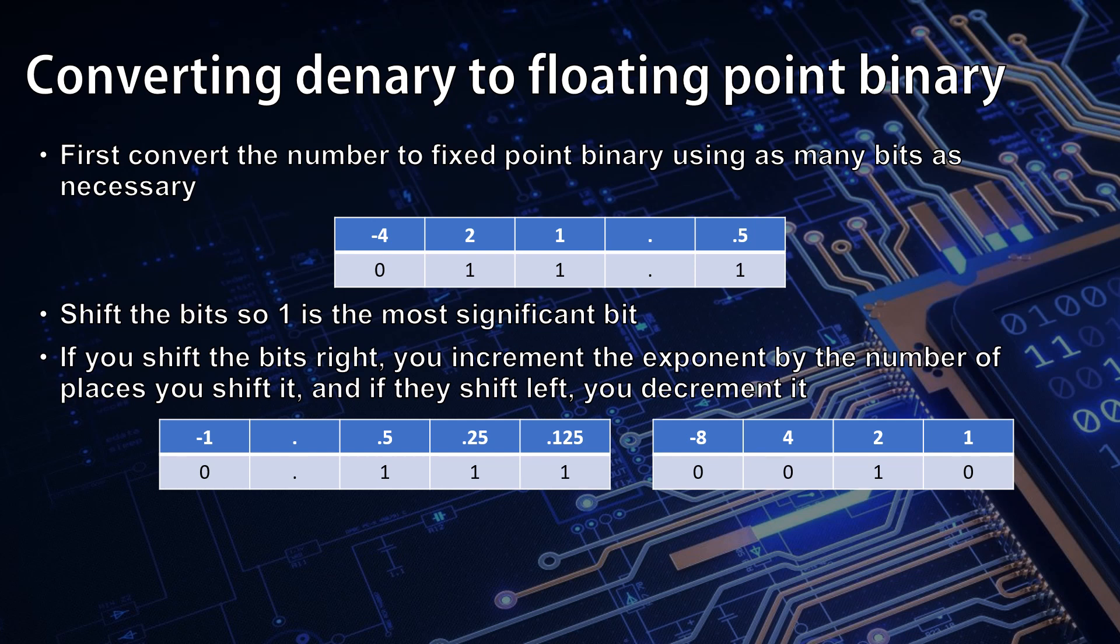In checking the calculation there, 0.875 times two to the power of two is indeed equal to 3.5. So 3.5 in floating point binary with four bits for the mantissa and four for the exponent would be 01110010.